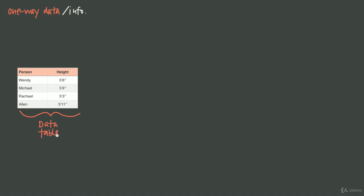Because I've arranged this data into a table, we can call this a data table. When we put our data into a table where we have a header across the top or down the side and then have our data collected and summarized in that format, we call it a data table. Inside this table, we have the people, and the people we call individuals.